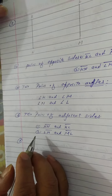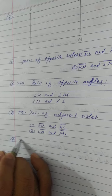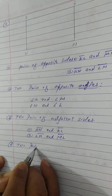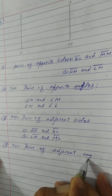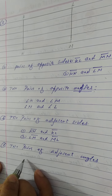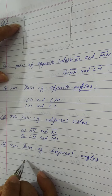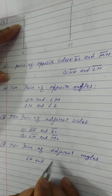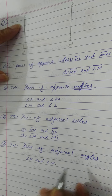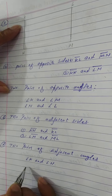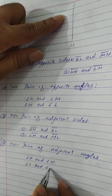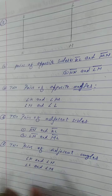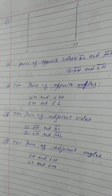Got it? Now D: two pairs of adjacent angles. Just as we have adjacent sides, similarly we have adjacent angles. Angle K and angle N form one pair, and angle L and angle M are the two pairs of adjacent angles.